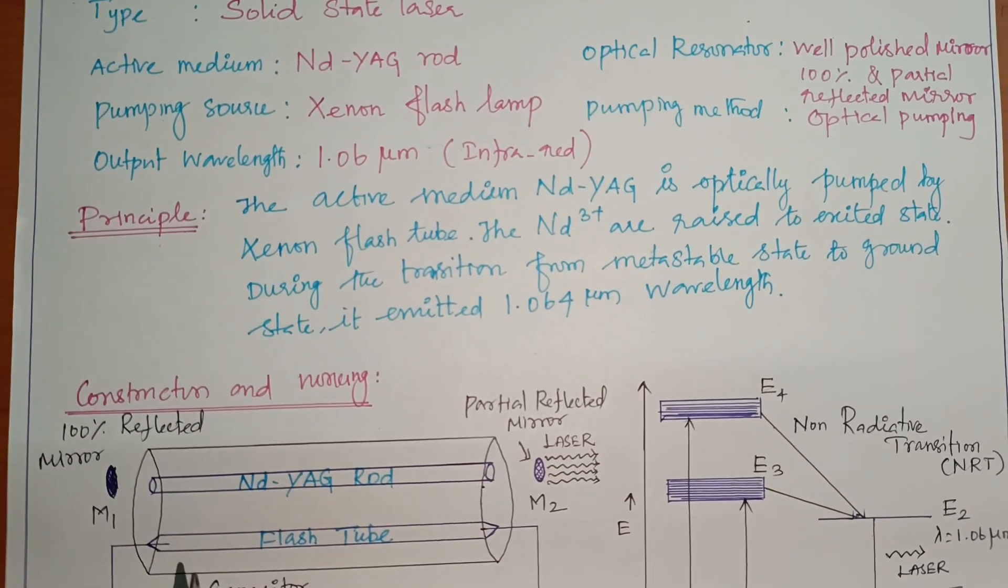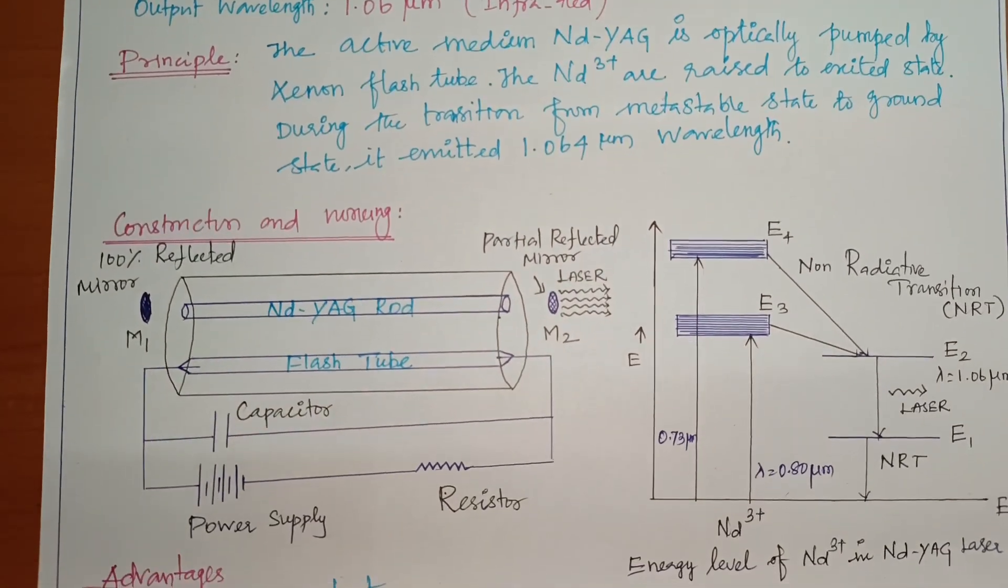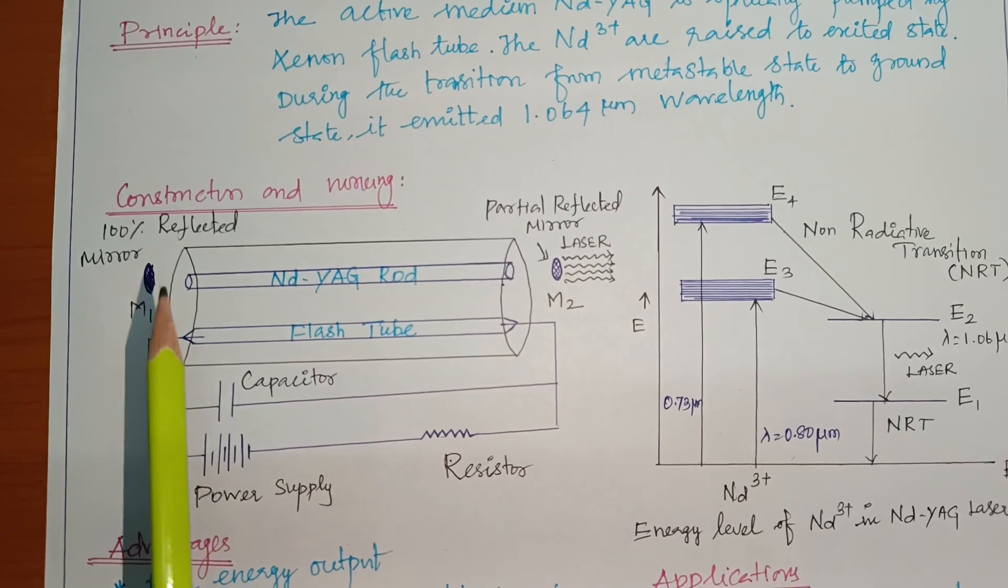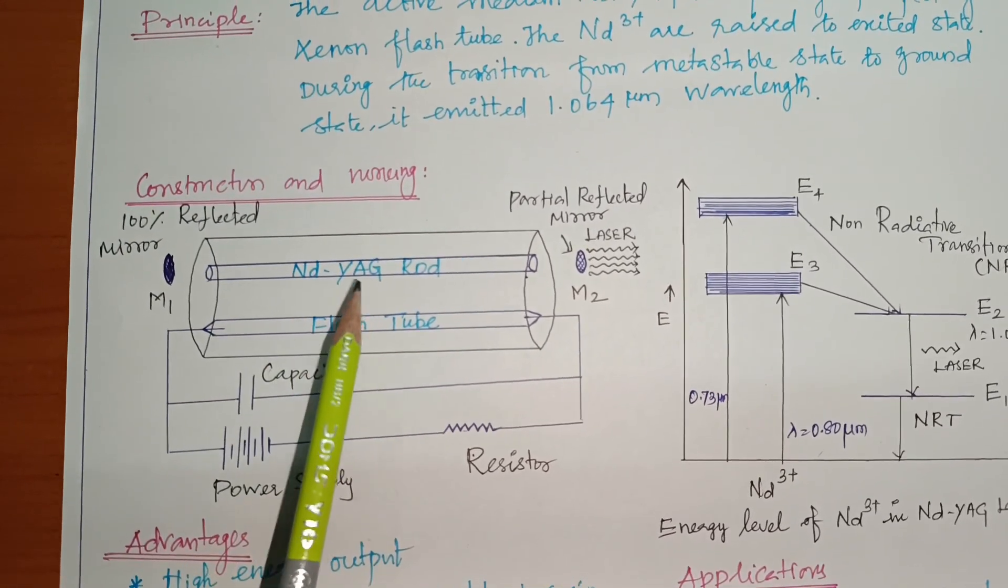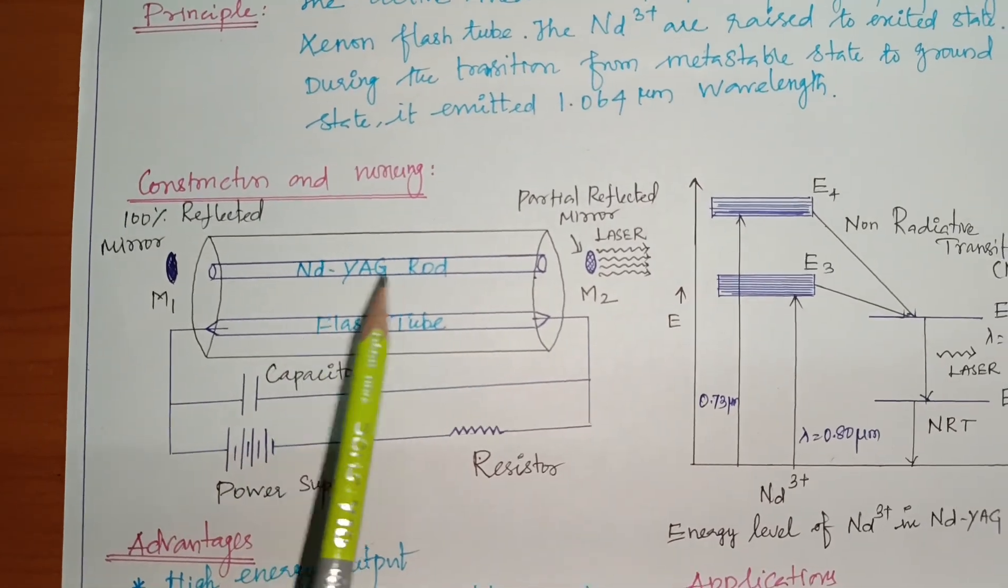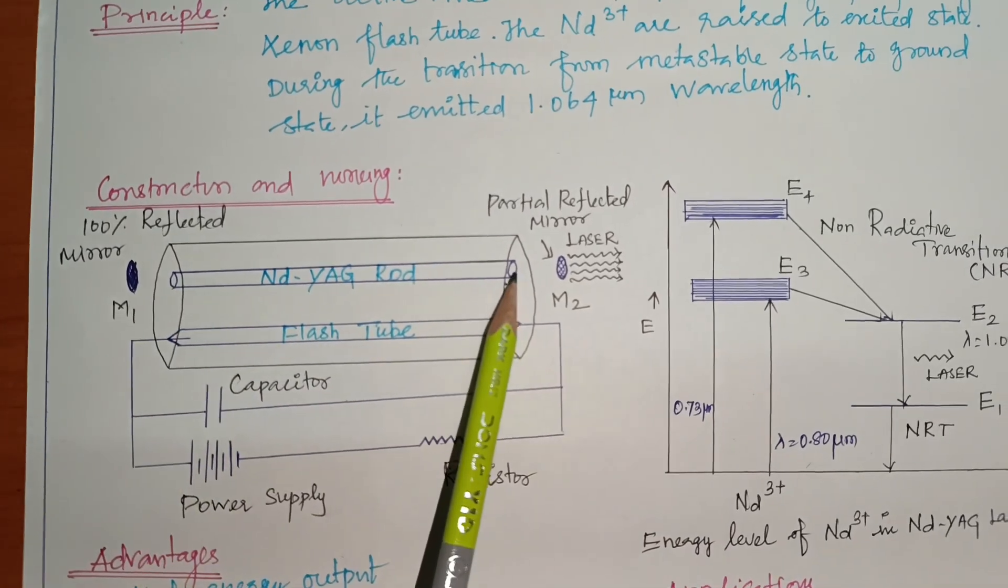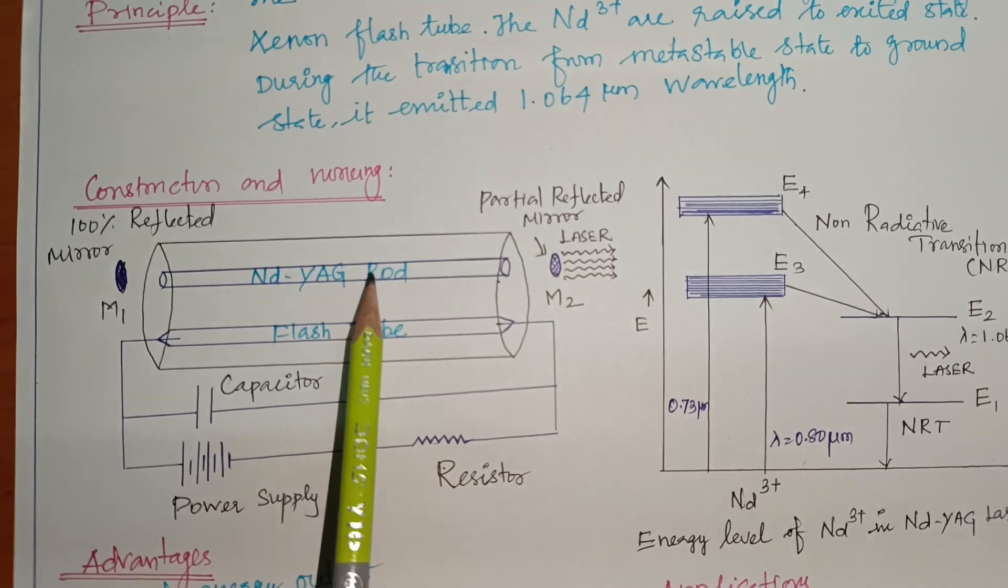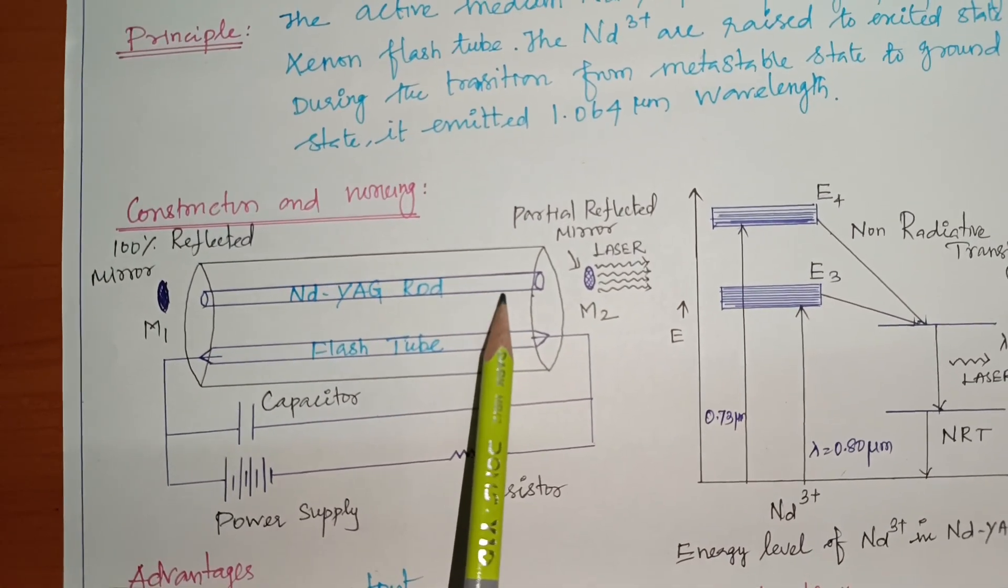Next is construction and working. Construction is already told that there are three components. One is active medium. Here active medium, we are taking Nd:YAG crystal rod. Crystal rod. This rod is both ends well polished. Both ends well polished. The length is 10 centimeter. 10 centimeter. The diameter is 6 centimeter to 9 centimeter diameter.